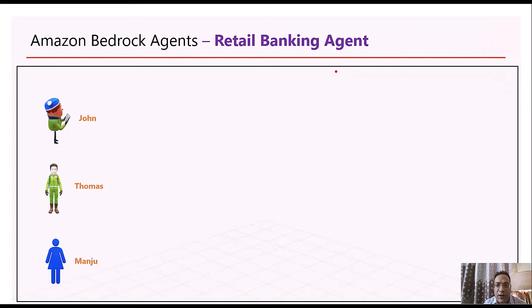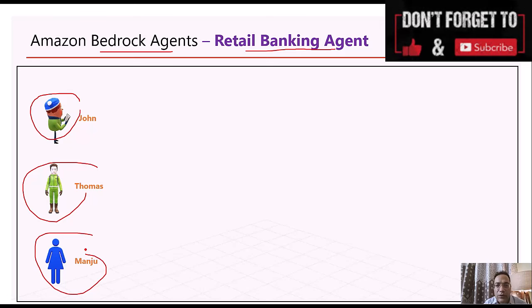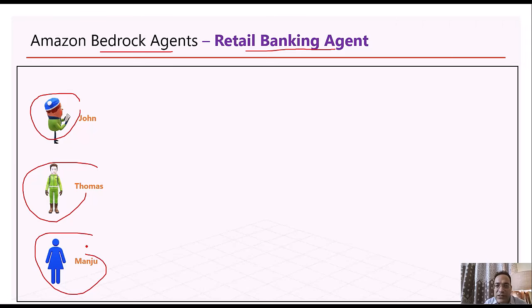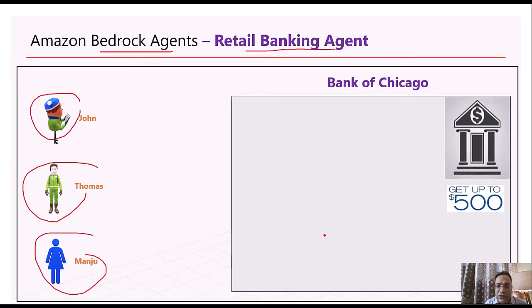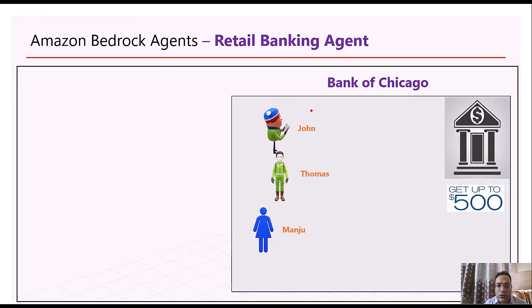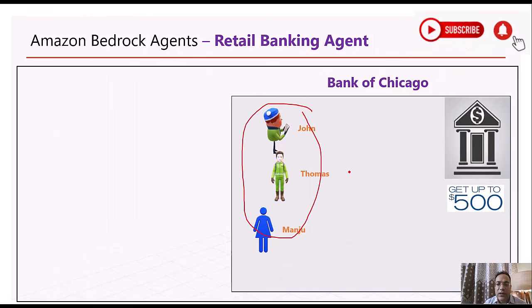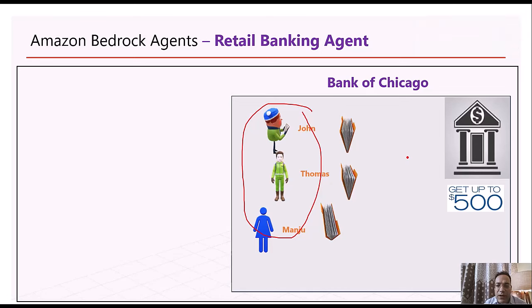Now let's explore what we're going to build as part of this use case. Using Amazon Bedrock Agents we're going to create a retail banking agent. Let's take an example — we have three banking customers: John, Thomas, and Manju, who are trying to open a new checking or saving account. They live in Chicago and there's a fictitious Bank of Chicago which is offering $500 credit for anyone who opens a new checking or saving account. All three head out to open the account, submit the requisite documents, and the bank provides them a temporary account ID — John is 5555.